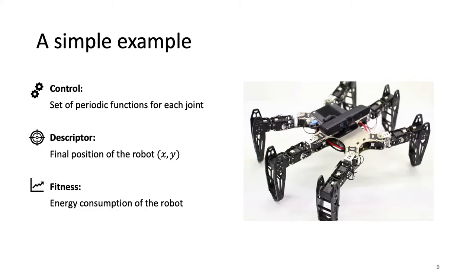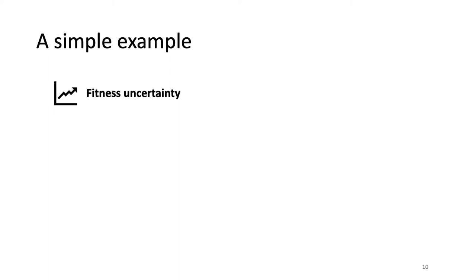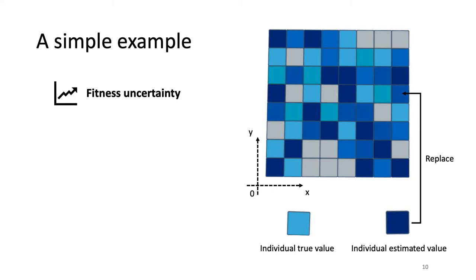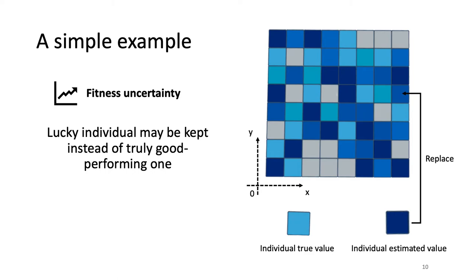If you have an error in the estimation of the fitness — meaning your sensors are noisy and you cannot get the exact energy consumption — you can have one individual that is estimated with a value higher than its true value and will then replace an individual already in the grid that has a lower value. If this estimated value is higher than every possible value you can get for this behavior descriptor position, you will keep an individual that is lucky instead of a truly good-performing one, resulting in a loss in performance of the overall population.